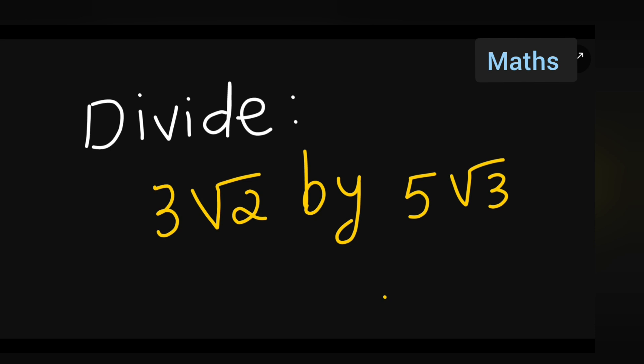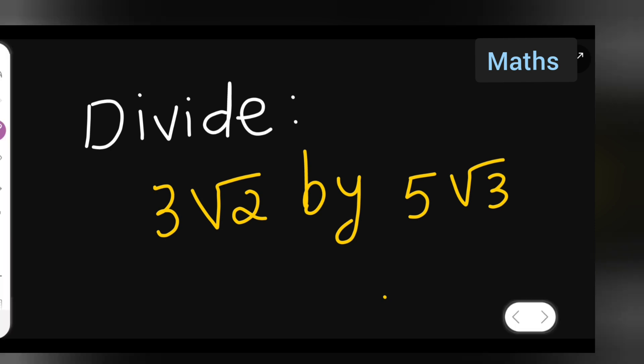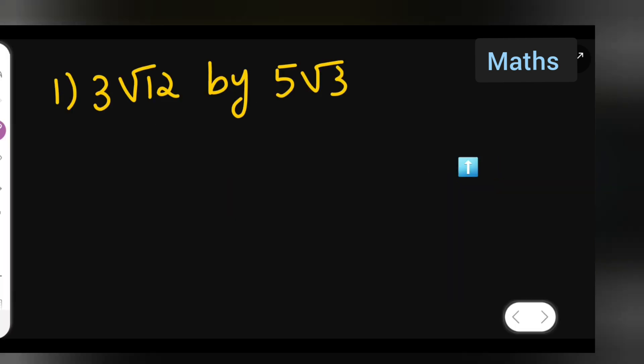Now, let us see how to divide 3√12 by 5√3. First take down the question. You will have to divide this by this.